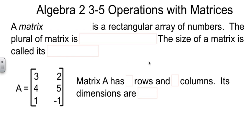When we're talking about a matrix, what we're talking about is a rectangular array of numbers. And the plural of the word matrix is matrices. So when we say matrices, we're just talking about more than one matrix. Don't let the words trip you up.